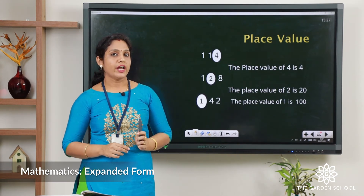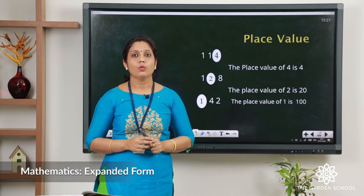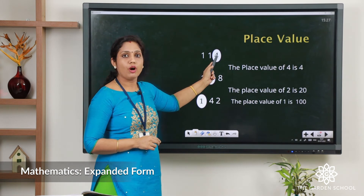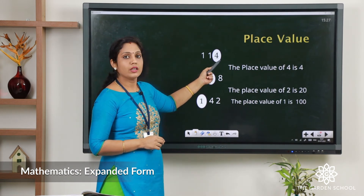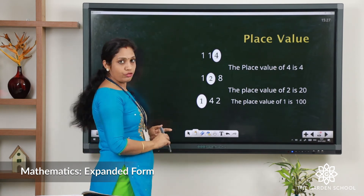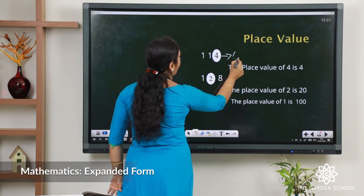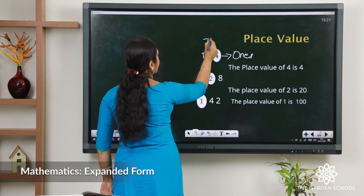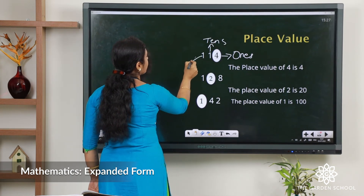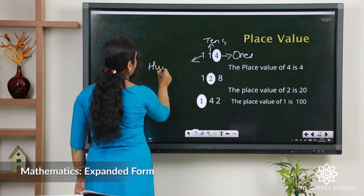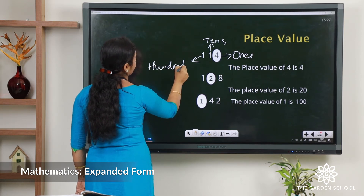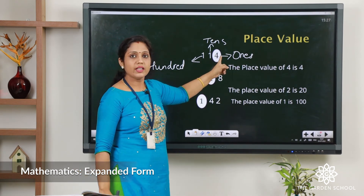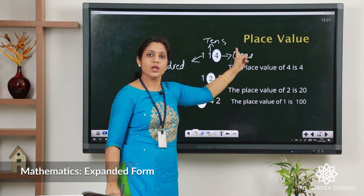Now let us find out the place value in the number 114. We have to find out the place value of 4. Checking from the right: ones, tens, hundreds. 4 comes in the ones place, this 1 comes in the tens place and this 1 comes in the hundreds place. So we have to find the place value of 4 — we can write it as 4, because it comes in the ones place.